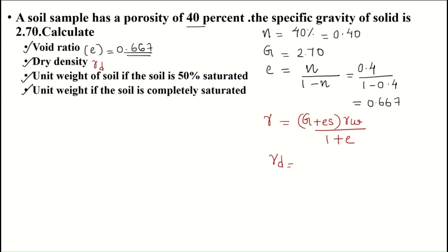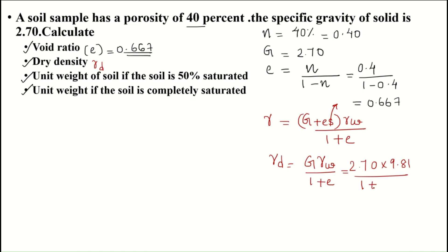When it becomes gamma_d, the degree of saturation S becomes 0, and our equation simplifies to: gamma_d = G · γ_w / (1 + e). Here all values are known: G is 2.70, γ_w is 9.81, and (1 + e) is 1.667. Calculating, we get 15.89 kilonewtons per meter cubed.